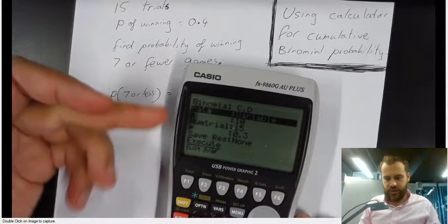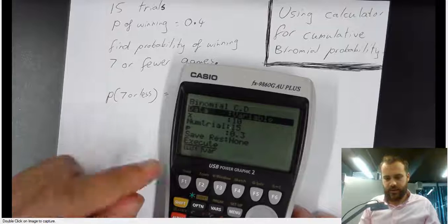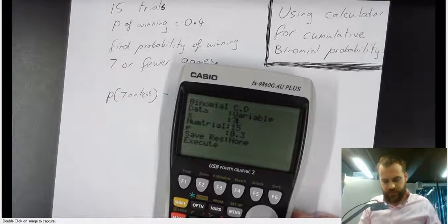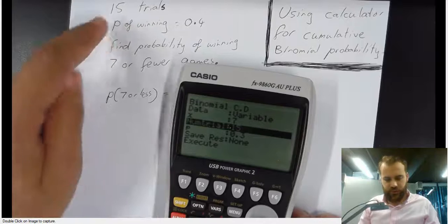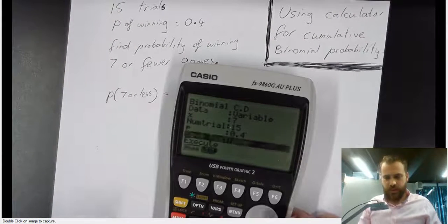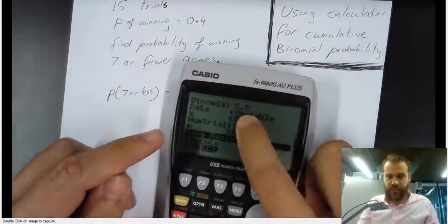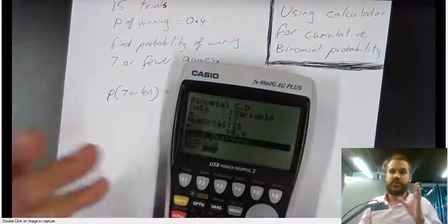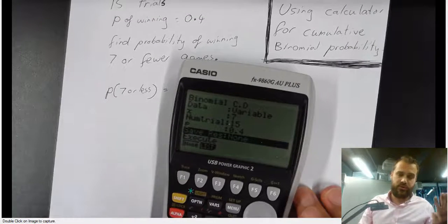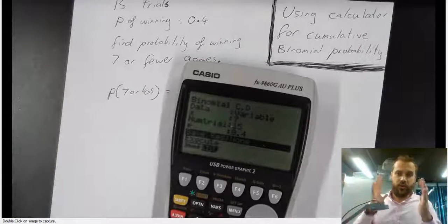The screen looks exactly the same as before, but the difference here is that I'm going to enter X = 7, number of trials = 15, probability = 0.4. When I do this, it's not going to tell me the probability of exactly 7. It's going to tell me the probability of 7 or less — of 0, 1, 2, 3, 4, 5, 6, or 7 — all added together.